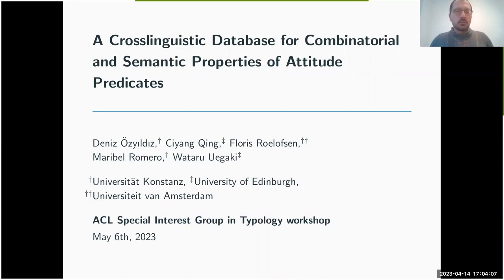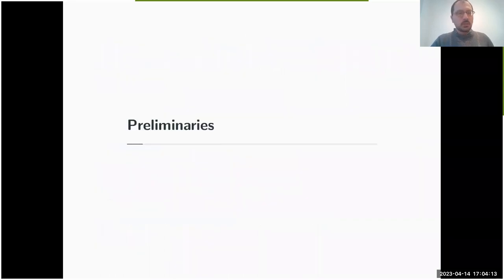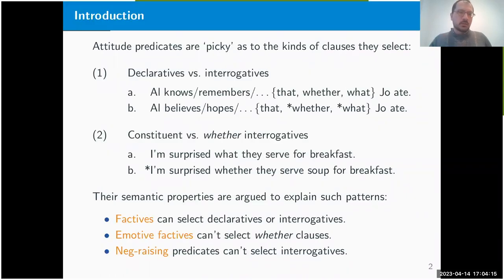Today, we'll be telling you about our cross-linguistic database for the combinatorial and semantic properties of attitude predicates. Attitude predicates are verbs and adjectives that combine with sentential constituents—verbs like know, believe, hope, and so forth. A long-standing observation in the literature has been that these predicates are picky as to the kinds of clauses they select.